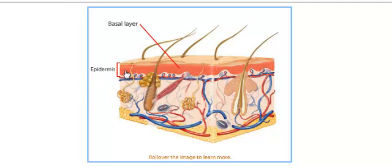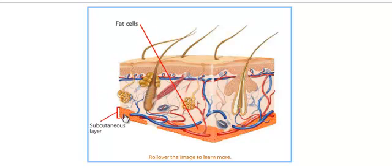The top layer we have is called the epidermis layer. Then the middle layer is called the dermis layer. And then at the bottom of the skin we have what's called the subcutaneous layer, also known as the fatty layer.